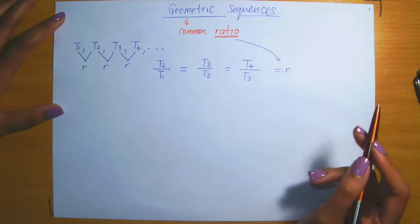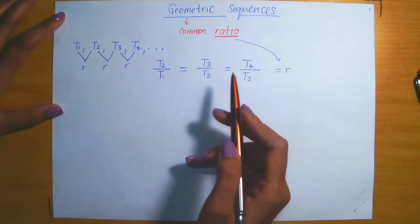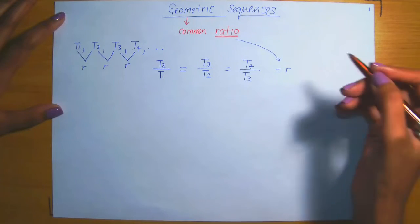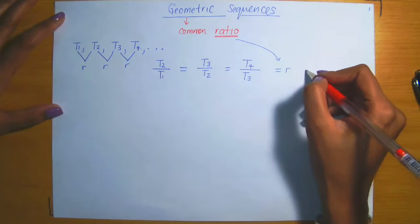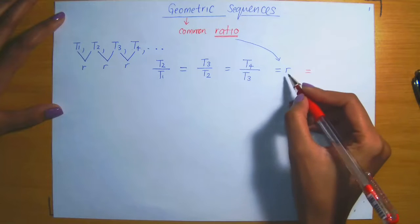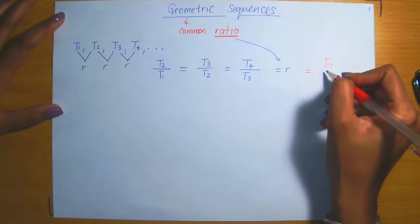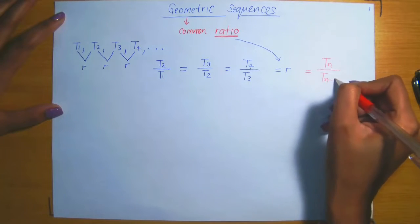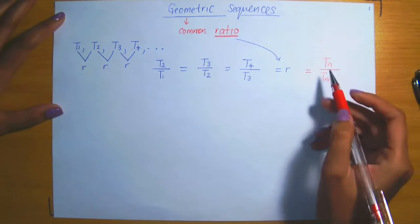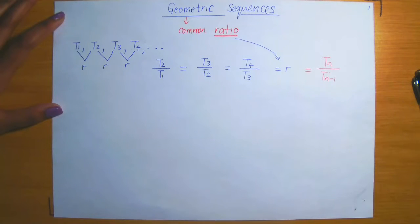So if we have a geometric sequence satisfying this property, then we can state the following in general. The common ratio can be determined by taking the nth term in the sequence and dividing it by the (n-1)th term, meaning tn divided by tn minus 1.